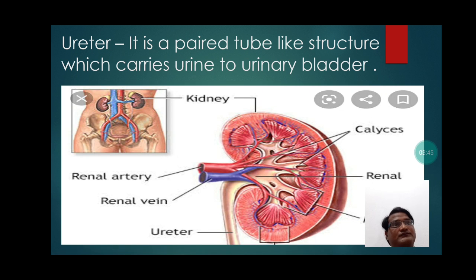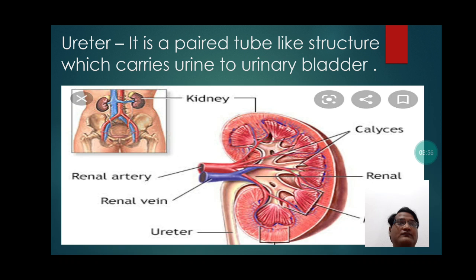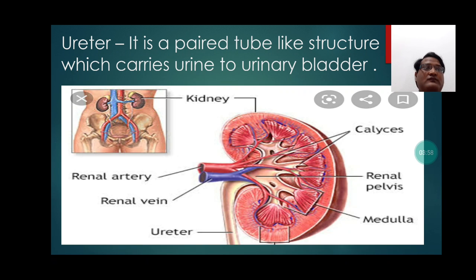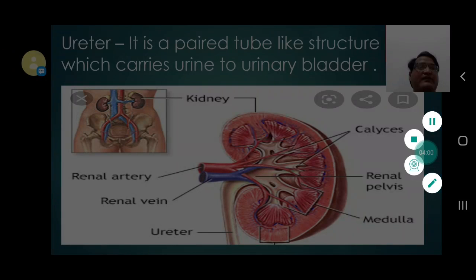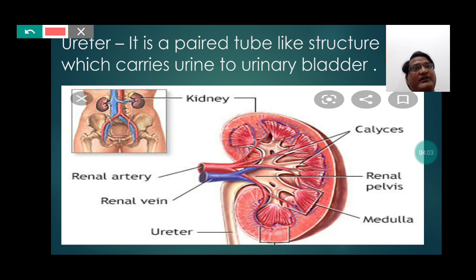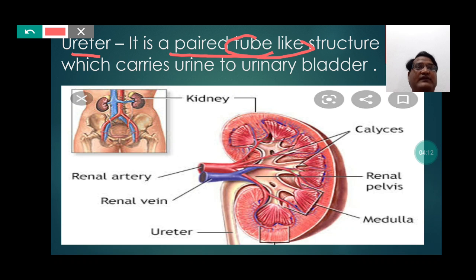Ureter — it is a paired, tube-like structure which carries urine to the urinary bladder. The ureter is a paired tube-like structure, and its main function is to carry the urine to the urinary bladder.